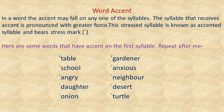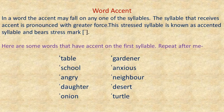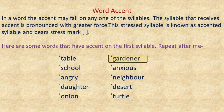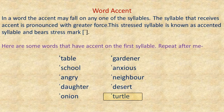Once again, let's repeat these words: table, school, angry, daughter, onion, gardener, anxious, neighbor, desert, turtle.